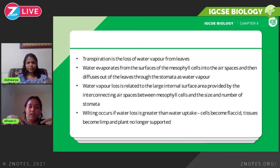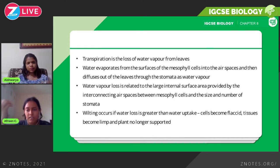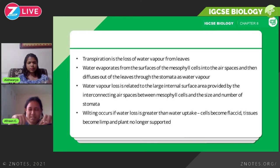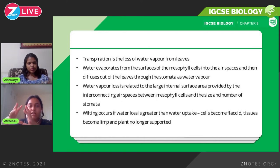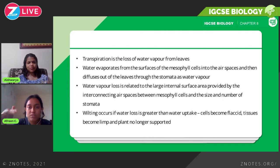Wilting occurs if water loss is greater than water uptake. When water evaporates it creates demand for more water, but if that demand is not met, the cells become flaccid, the tissues become limp, and the plant is no longer supported. Think about the vacuole — it's a large space that contains water, and when it's full it gives the cell a robust shape. When it's empty, the cell loses rigidity, becomes smaller, and starts to limp. When this is happening to many cells, the entire plant wilts. But as soon as you water the plant, the water supply is replenished and the plant is no longer wilting.